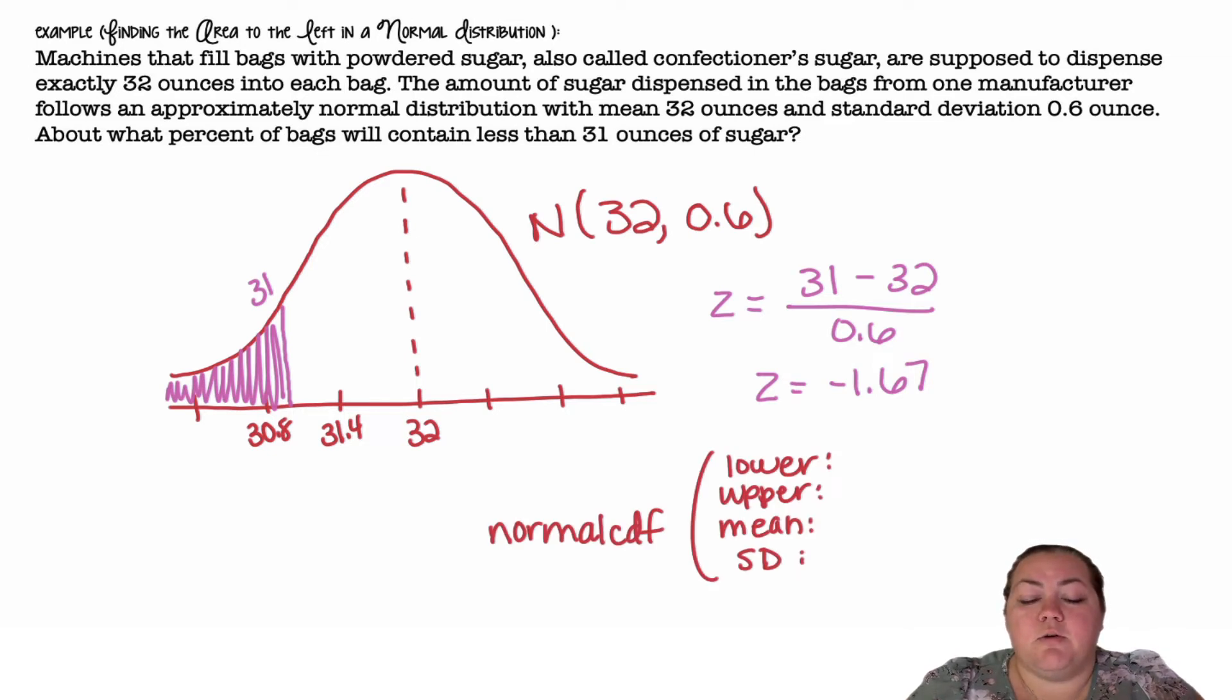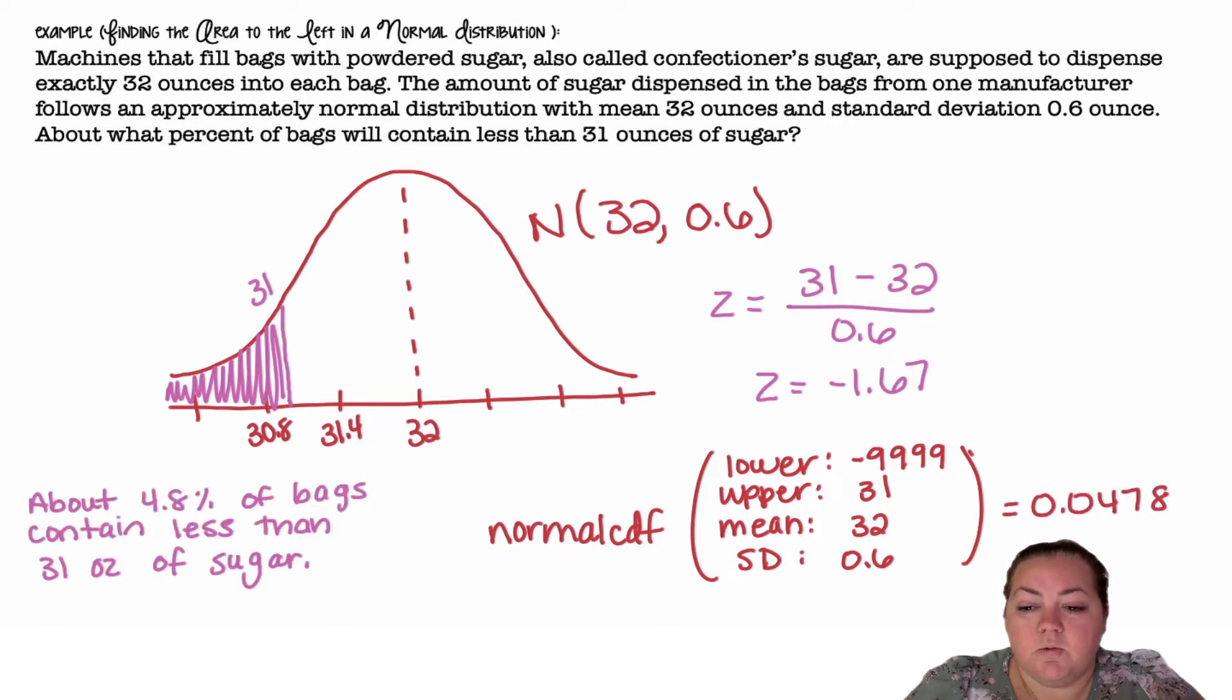If I'm using the calculator, I'm going to do a normal CDF. My lower bound is going to be negative 999, it's really going to negative infinity. My upper bound is going to be 31, my mean 32, and my standard deviation 0.6, which gives me 0.0478, or about 4.8% of the bags contain less than 31 ounces of sugar.